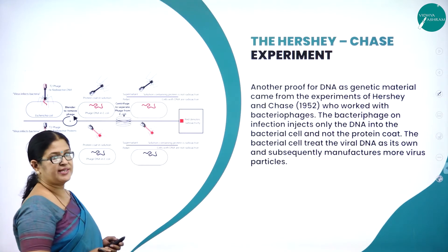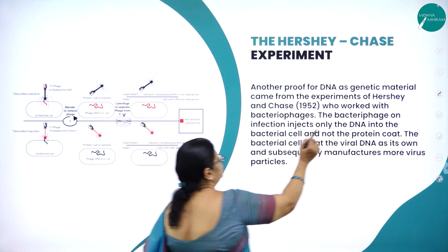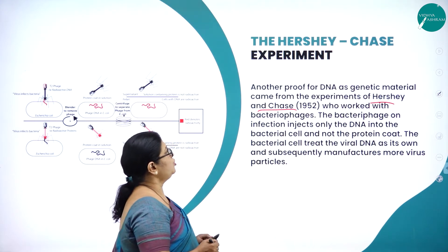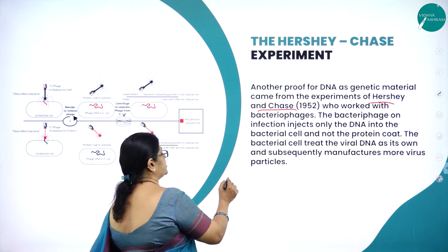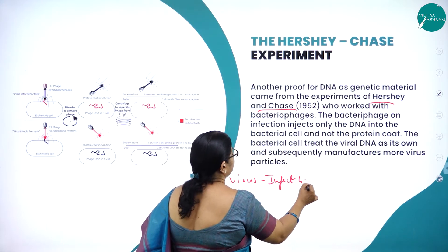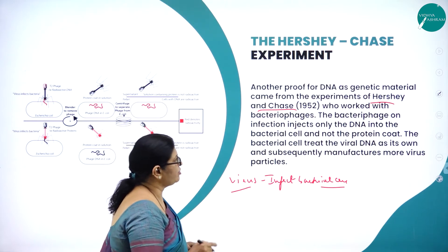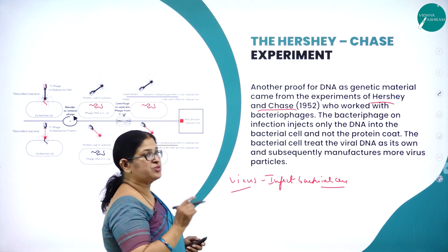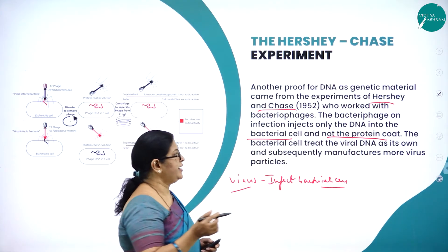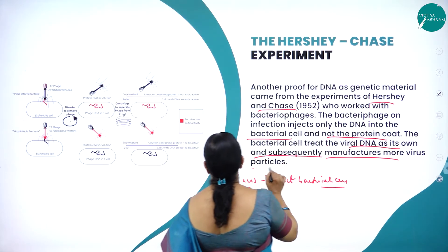Another proof for DNA as genetic material came from the experiments of Hershey and Chase in 1952, who worked with bacteriophages. Bacteriophages are viruses which infect bacterial cells. The bacteriophage on infection injects only the DNA into the bacterial cell and not the protein coat, and the bacterial cell treats the viral DNA as its own and subsequently manufactures more virus particles.